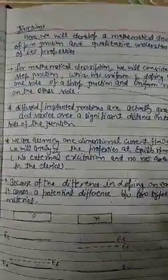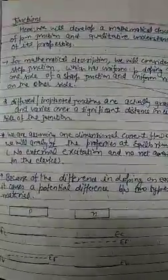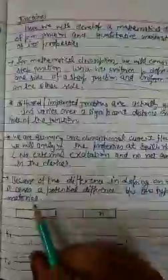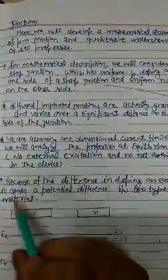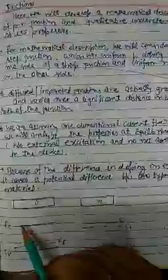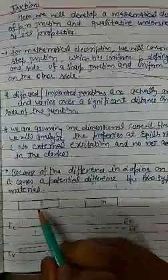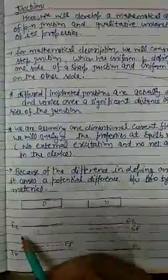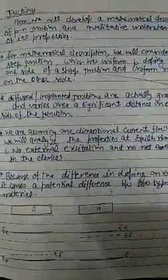No net current means the hole current and electron current cancel each other, whether of diffusion type or drift type. For the P-type material, the band diagram has a conduction band and valence band separated by the band gap. Since it has a majority of P-type carriers of acceptor level, the Fermi level lies below the intrinsic level — somewhere near the valence band, below the intrinsic level.